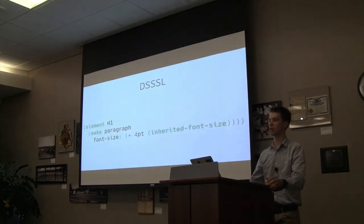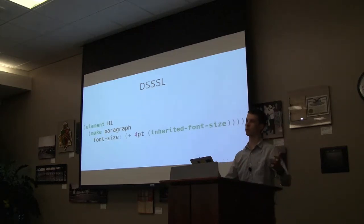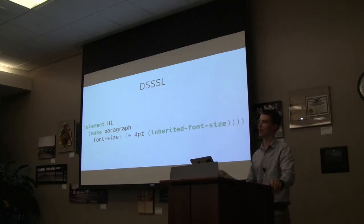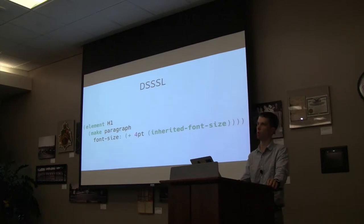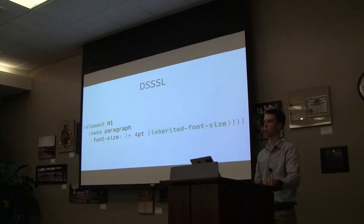You could also take the inherited font size and just add 4 to it — something you still can't do in CSS. Even CSS variables only get you partway there. So why didn't DSSSL succeed? Basically, it looked like Scheme, and everybody knows there are way too many parentheses in Lisp or Scheme for people to understand. Ultimately it was too complicated for browser implementers, and for everyday web developers who just wanted to hand-crank out their HTML — they wanted something more declarative.